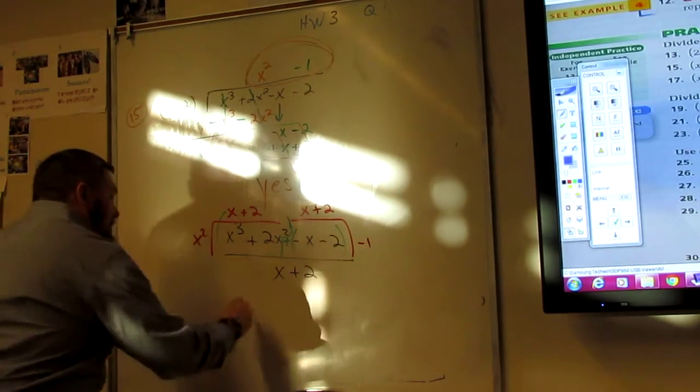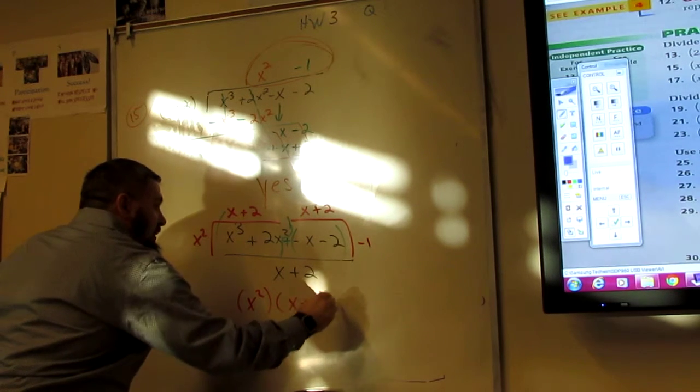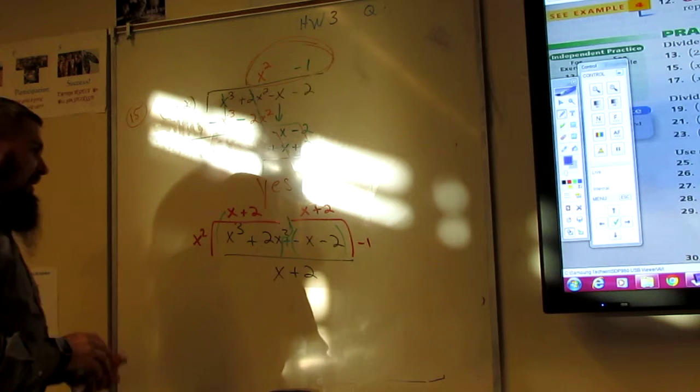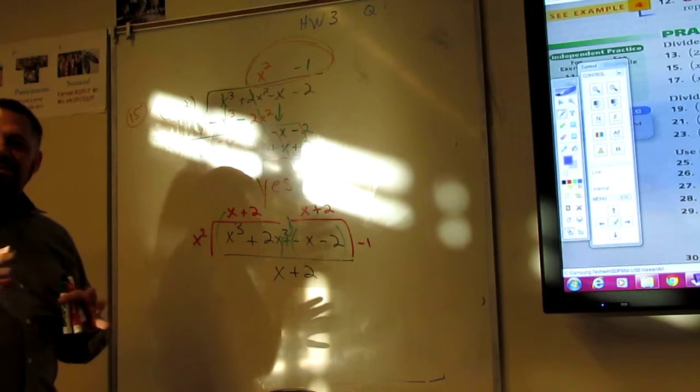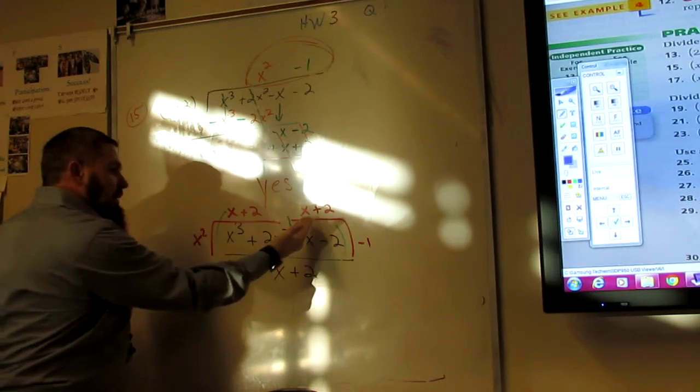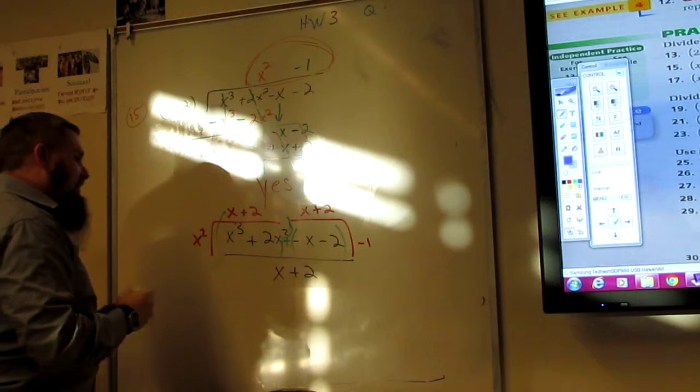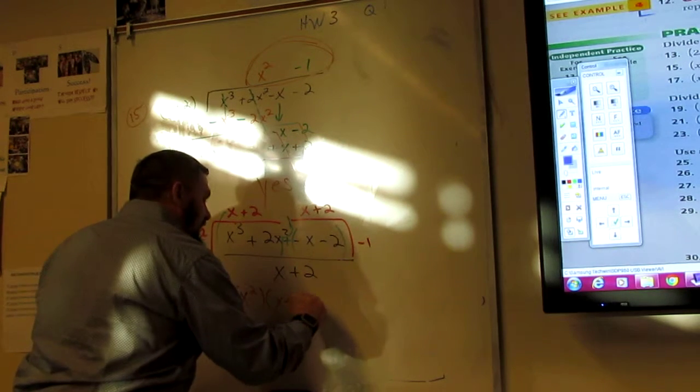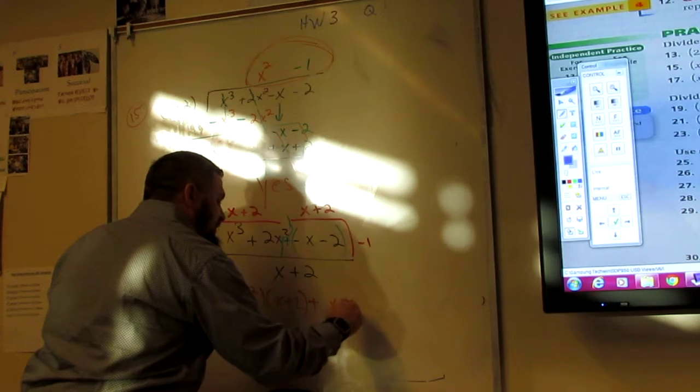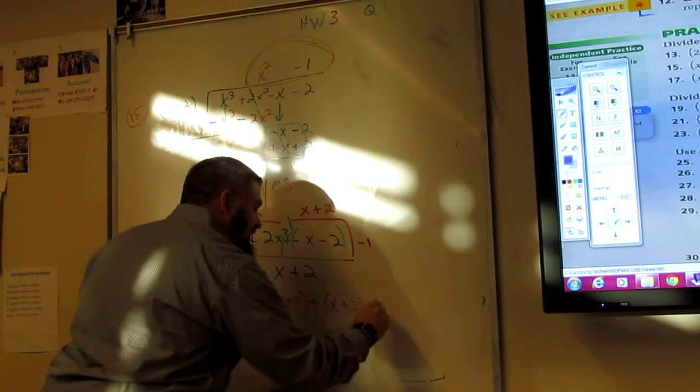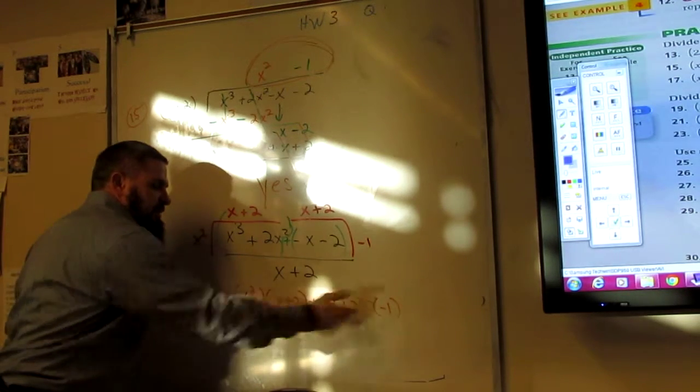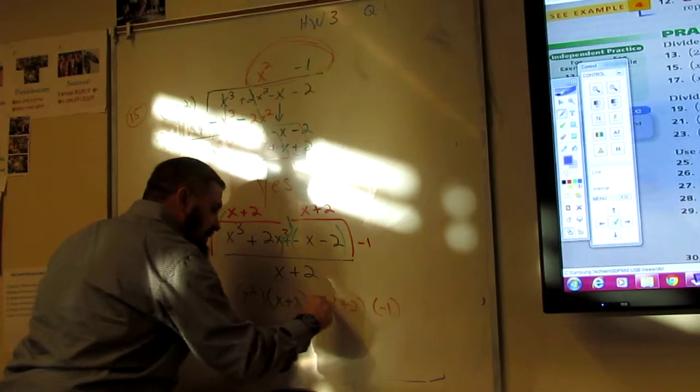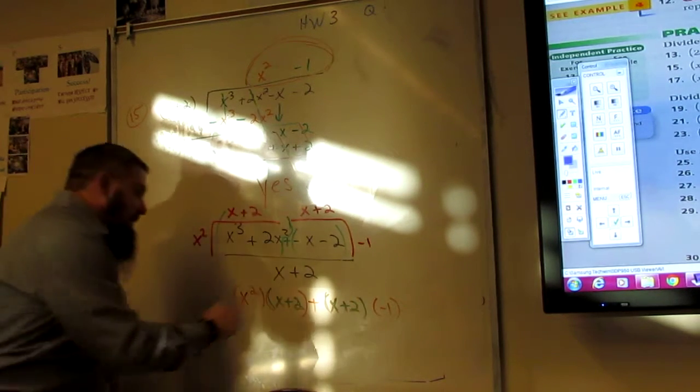And so what you leave with is x squared times x plus 2 times... Now, here's the thing. Sorry, sorry, sorry, sorry. Slow your roll down. So, the common factor between the two of them is this. This is a little harder to understand, but this is what's going on. I get x squared times x plus 2 plus x plus 2 times negative 1. Now, what's common between those? Now, what's common between these two? What's common? x plus 2, x plus 2. That's what's common.